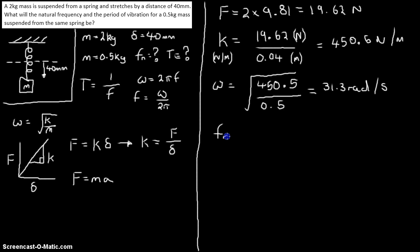Our frequency now. We've said our frequency, natural frequency, Fn is equal to our omega divided by 2pi. So, 31.3 divided by 2pi.